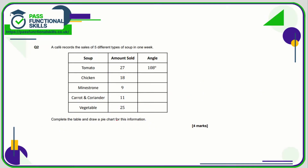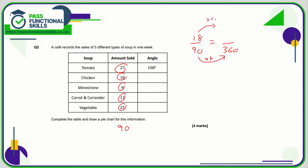For question number two, the first thing we need to do is work out the total amount of soup sold. Adding up all the figures, the total is 90. For chicken, that's 18 out of 90. We're trying to turn this into a fraction out of 360 degrees. To turn 90 into 360 we multiply by 4, so we multiply 18 by 4, which gives 72 degrees.